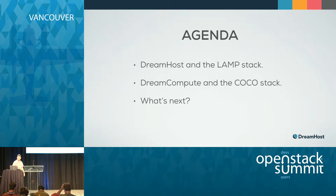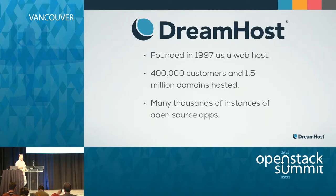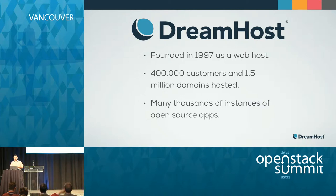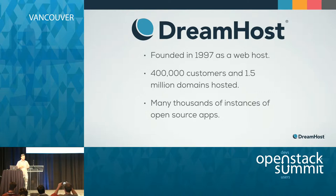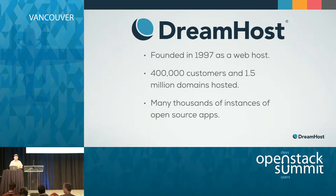DreamHost was founded in 1997 by four students at Harvey Mudd, which is a small school in Southern California. One of those founders was Sage Weil, the creator of Ceph. We were founded as a web host doing shared hosting at the time. Over that period, we've evolved and grown to 400,000 customers and 1.5 million domains hosted. We've got hundreds of thousands of instances of many open source applications — WordPress is the dominant one that we host.